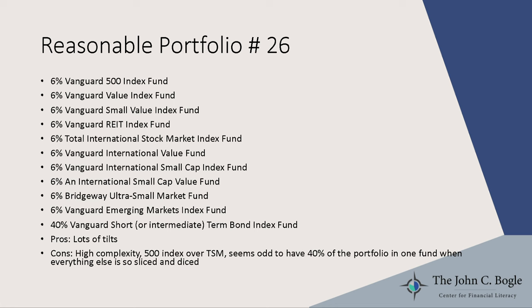The Ultimate Buy and Hold portfolio from Paul Merriman puts 6 percent into each of 10 different stock asset classes, then 40 percent into a bond fund. The pros: lots of tilts — if you believe in these factors, you've got them. Downsides: highly complex, it still uses the 500 index over total stock market, and it seems really odd to have 10 stock funds and only one bond fund. If you're going to slice and dice, why not slice and dice the bonds too?